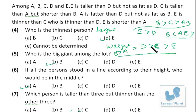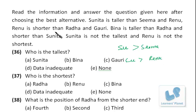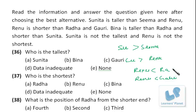Now let's take this next set of questions. Sunita is taller than Sima and Reno. Reno is shorter than Radha and Gauri as well. Bina is taller than Radha but shorter than Sunita. So we arrange: Reno, Radha, Bina, Sunita.